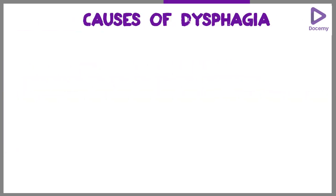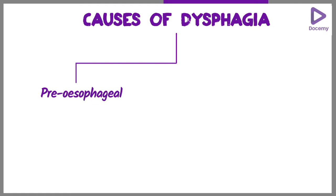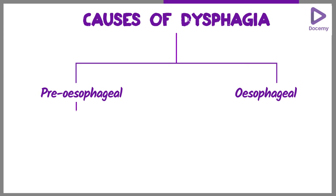The causes of dysphagia can be pre-esophageal or esophageal. Pre-esophageal is further divided into oral and pharyngeal.